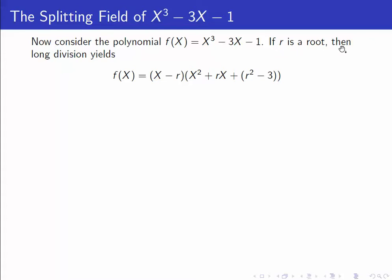If r is a root then long division tells us that f of x is x minus r times x squared plus rx plus r squared minus 3.